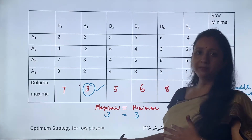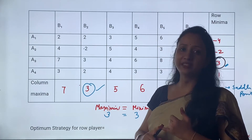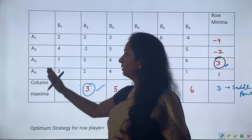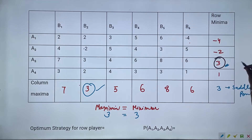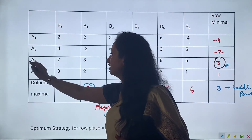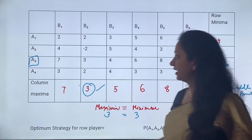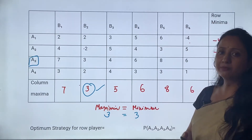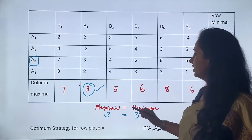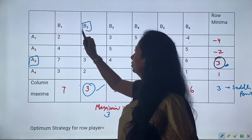आप इस question को कैसे present करेंगे: first is optimum strategy for row player. Row player है हमारा A. A के लिए optimum strategy वही होगी जहाँ saddle point locate करेगा। Saddle point 3 कौनसी row में आ रहा है? A3 वाली row में - that means इसके लिए optimum strategy है A3. For the column player, जिसमें 3 saddle point आएगा वो strategy है B2.